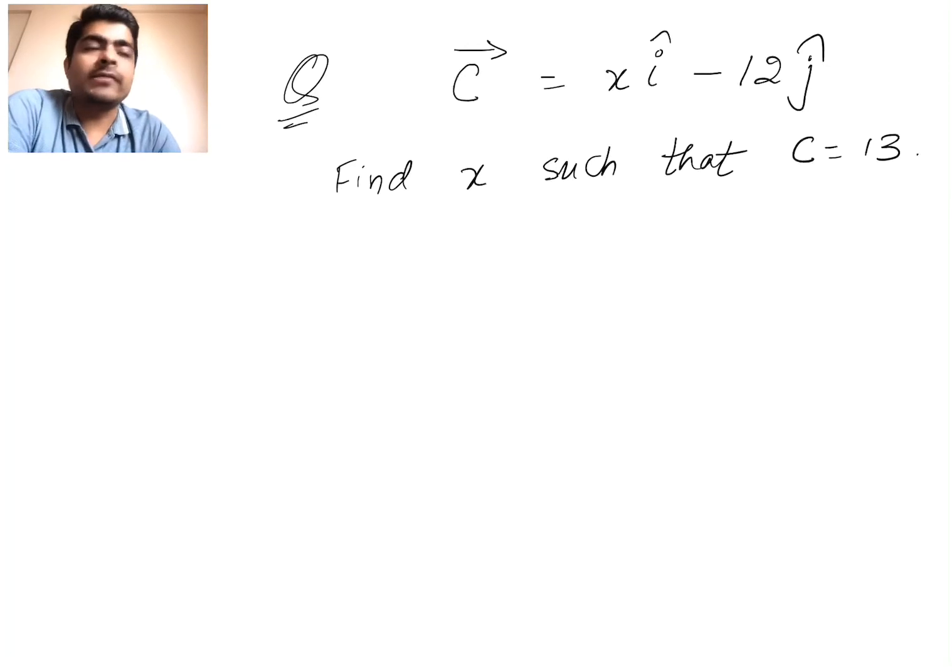Okay, now try one simple question. You can pause the video after reading this question. So the question says that c vector is equal to x i cap minus 12 j cap. Find x such that c equals 13. You can pause this video and try to solve this question yourself. All right, let's continue.